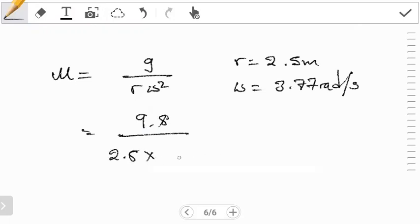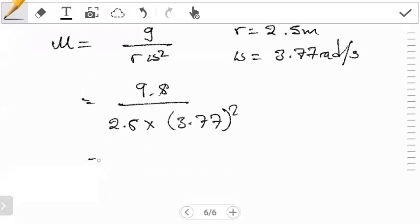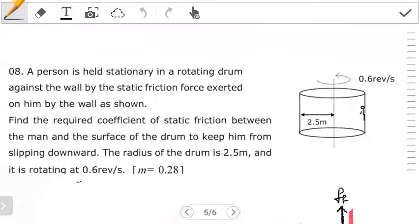Multiplying omega 3.77 squared. So when you multiply this and round off correctly, you should be able to get 0.28 as our coefficient of static friction. So if we go back to the question, this is exactly what they were looking for.